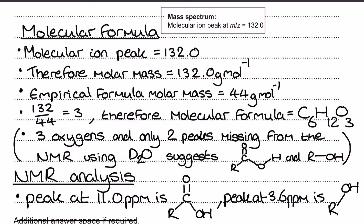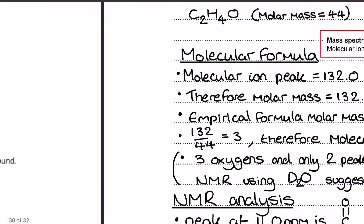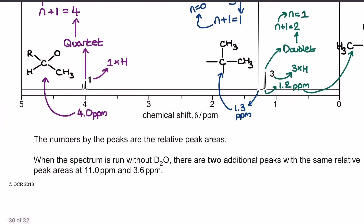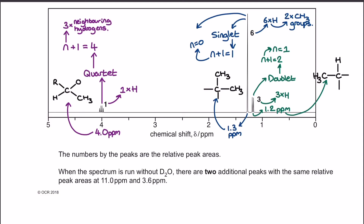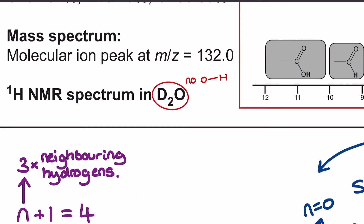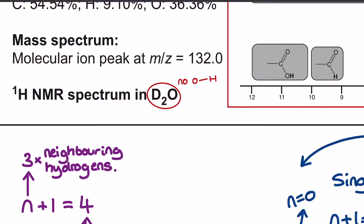Before I rush ahead into the NMR peaks, I'm going to consider a few lines from the exam question below the NMR spectrum. The spectrum has been run in D2O. Because of proton exchange, that means I'm not going to have any peaks for OH bonds — that would include carboxylic acids and alcohols — and it would normally include NH bonds too. But since there's no nitrogen in my formula, I'm ignoring that.